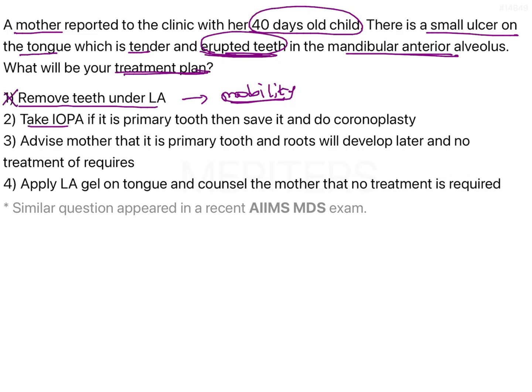The second option says: take an IOPA, and if it is a primary tooth then save it and do coronoplasty. This seems like an appropriate treatment approach. The third option says: advise the mother that it is a primary tooth, the roots will develop later, and no treatment is required. Although this may sound correct, no IOPA was taken and there is no mention of whether it is actually a primary tooth — and secondly, no treatment is done.